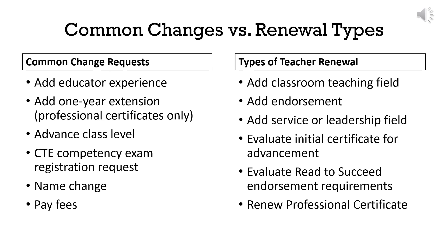There are many types of change requests that one can make in this portal. Many relate to changes that happen annually, like Educator Experience, new degrees that advance your class level, and even changes to your name. Other change requests relate specifically to Teacher Renewal and your Educator Certificate. This video will provide examples of Add Service or Leadership Field, Add Educator Experience, Submit a Name Change, and Evaluate Read to Succeed endorsement requirements. For additional information on types of Teacher Renewal, please view the separate video on that topic.